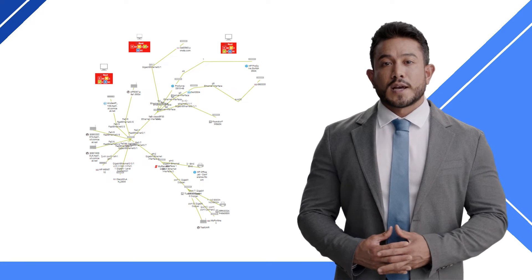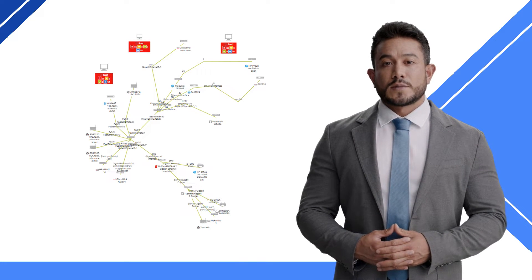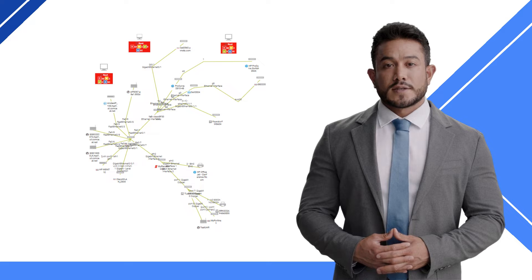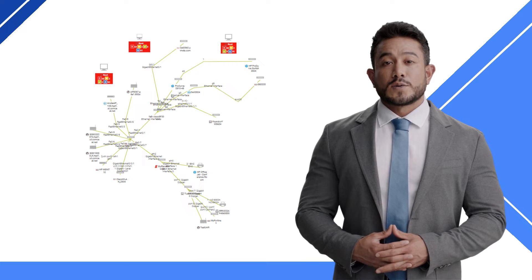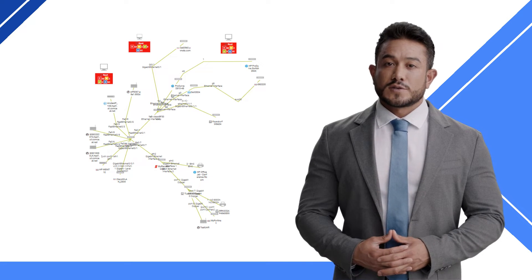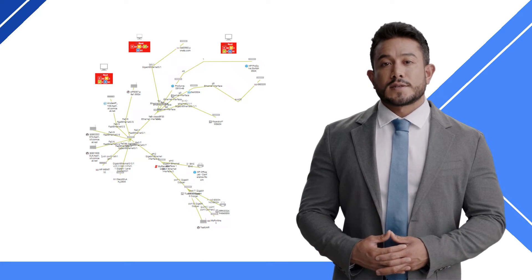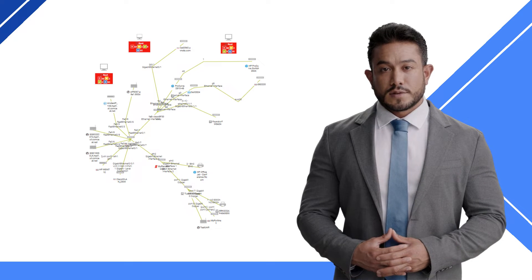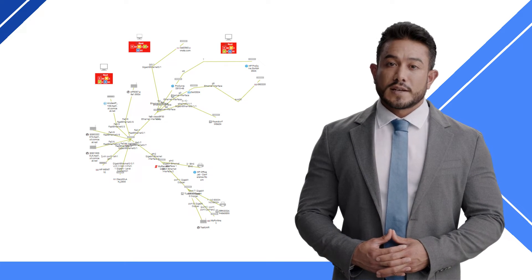The diagram shows the physical and logical connections between different devices and nodes in a network. The physical connections refer to the actual cables, switches, and routers that connect the devices. The logical connections refer to the way the data flows between the devices.